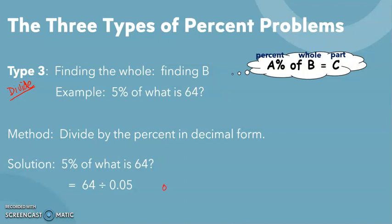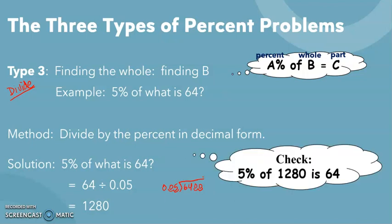You would do the long division. You'd go the 0.05 into 64, slide the decimal over two places, slide the decimal over two places and put it up on top, fill in the zeros, and your answer is going to be 1,280. Does it make sense? Think about it for a second.